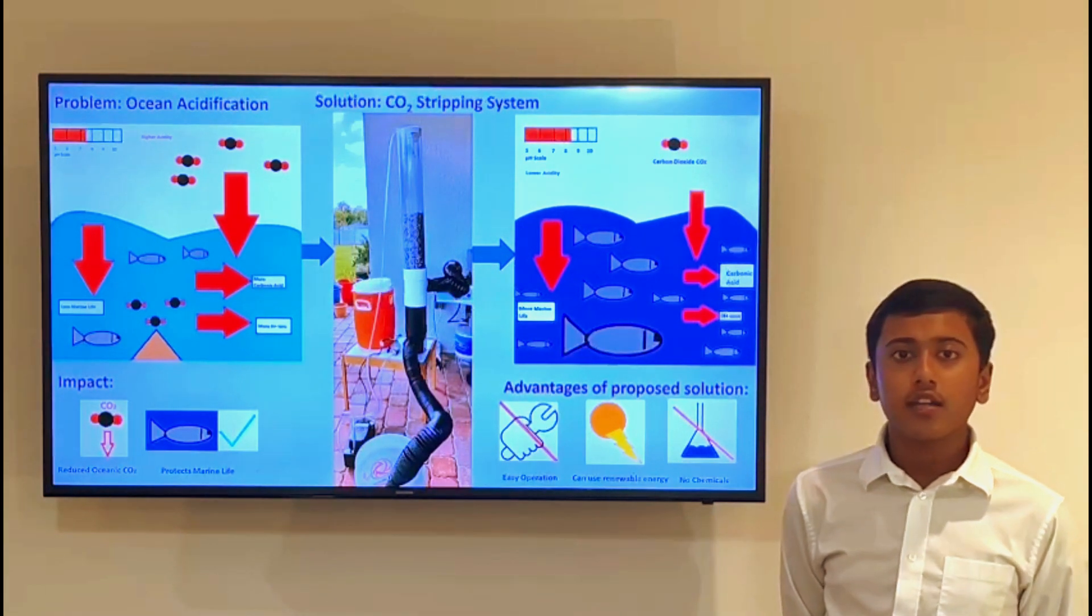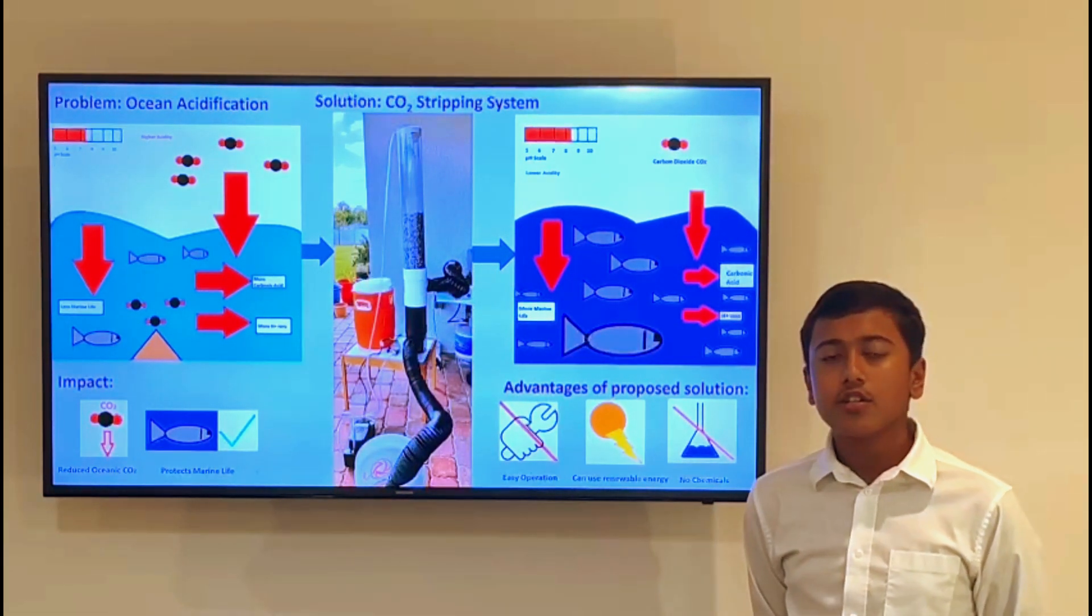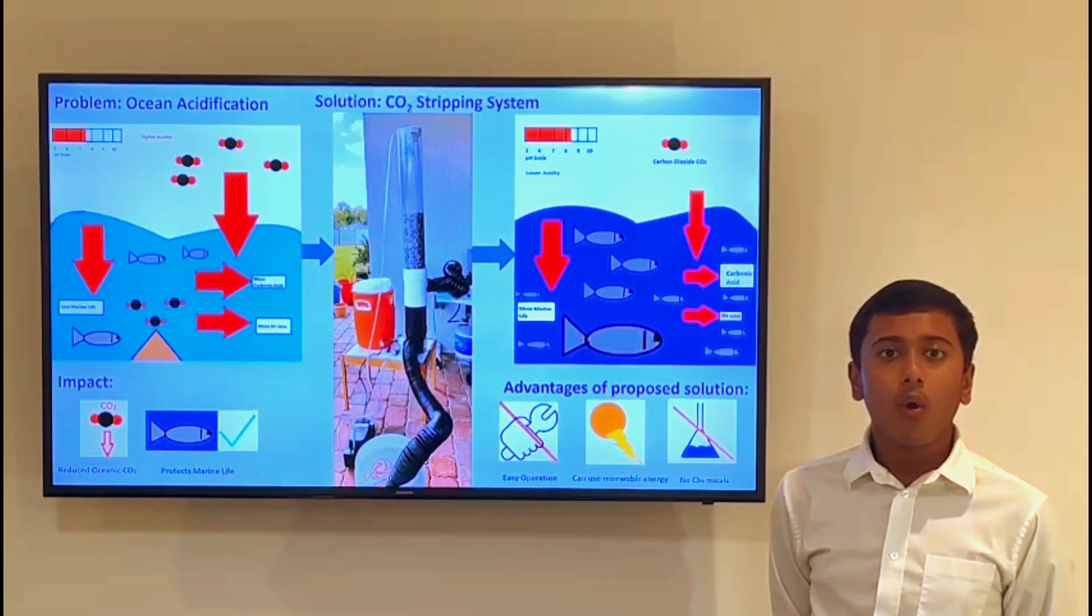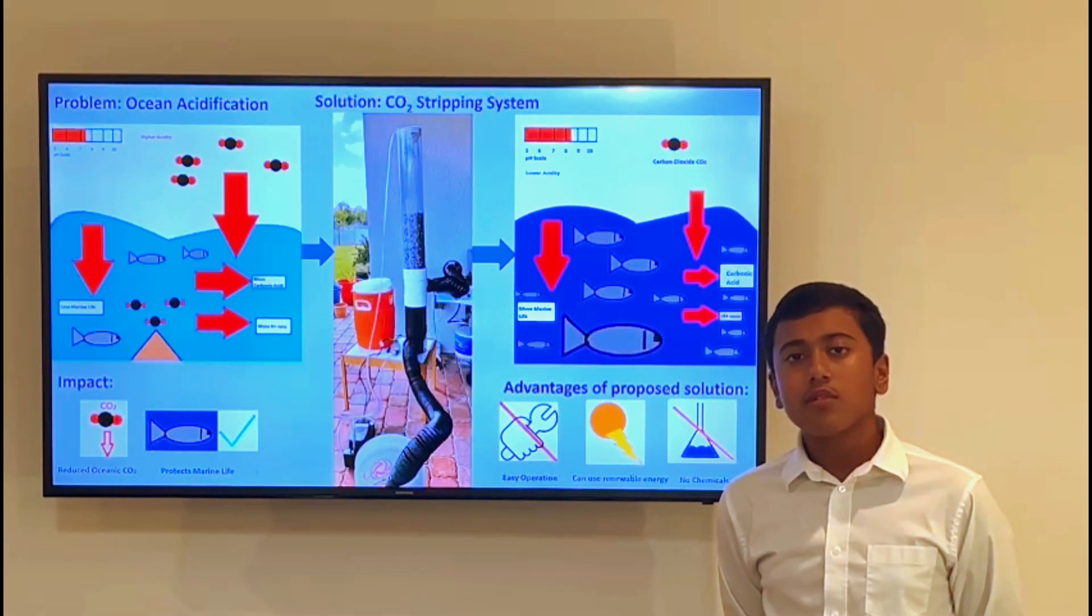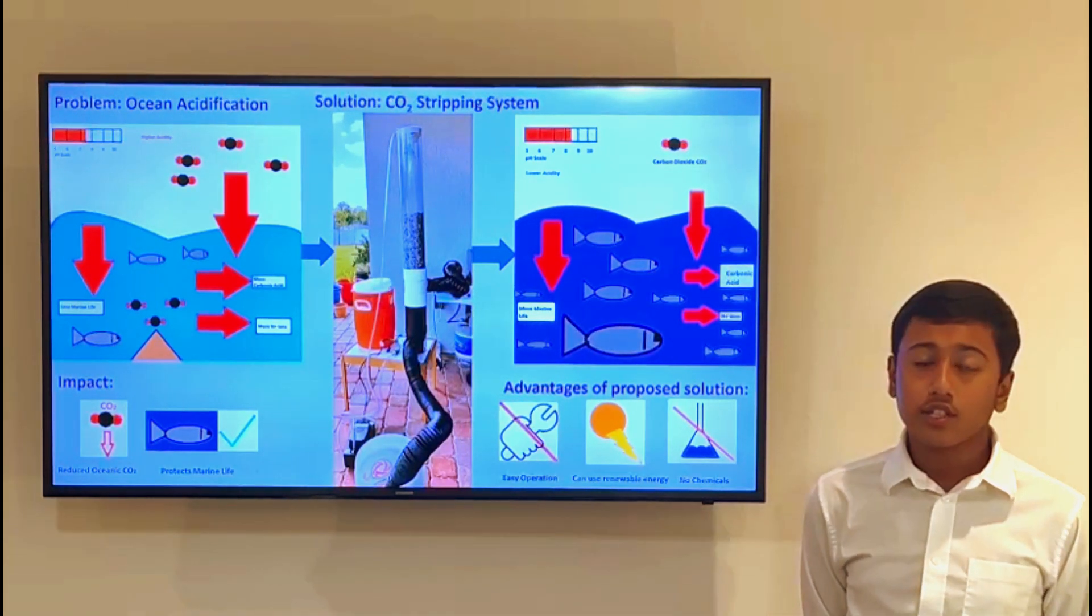Atmospheric carbon dioxide can either be absorbed by vegetation and converted to oxygen or captured and stored by direct air capture technologies.